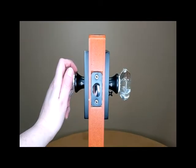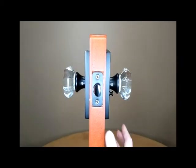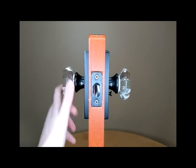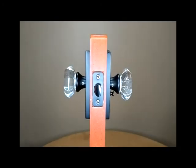If you have a privacy set, locking the doorknob set is as simple as pushing the privacy pin located on the inside of the door. The door can then not be opened from the outside. Simply twisting the knob on the inside will unlock the door.